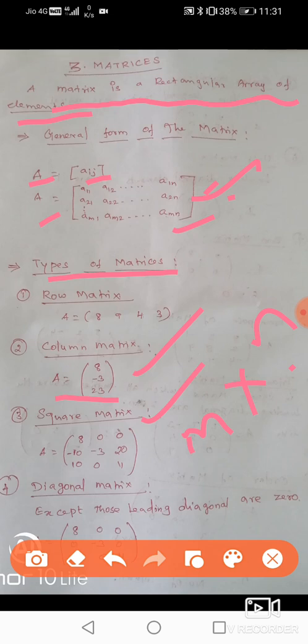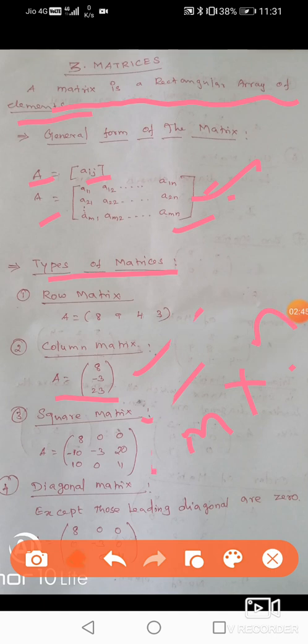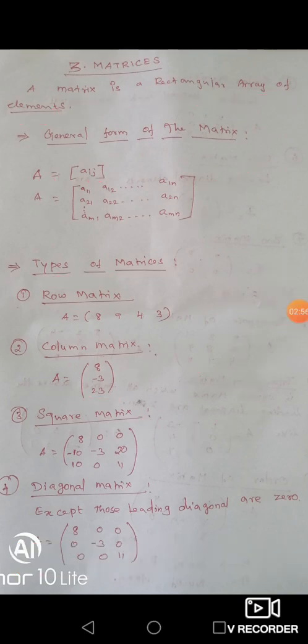Diagonal matrix. In a diagonal matrix, all elements except those on the leading diagonal are zero. The leading diagonal elements are in the middle, and all other elements are 0.